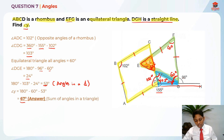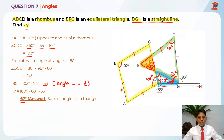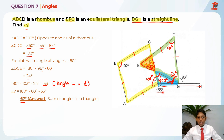To find angle Y, I take 180 degrees for the orange triangle minus 60 degrees minus 53 degrees, which gives 67 degrees. So 67 degrees is the answer. This is because of the sum of angles in a triangle. This question might look slightly harder, but it's simple if you understand vertically opposite angles, angles at a point, angles on a straight line, and the properties of a rhombus and equilateral triangle.